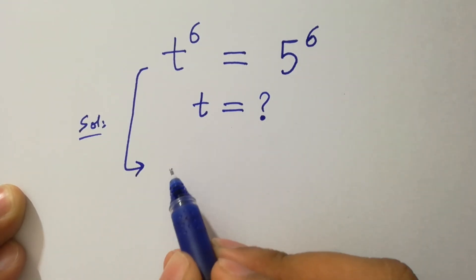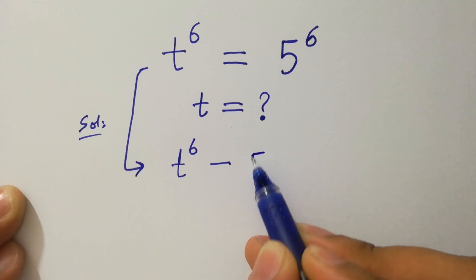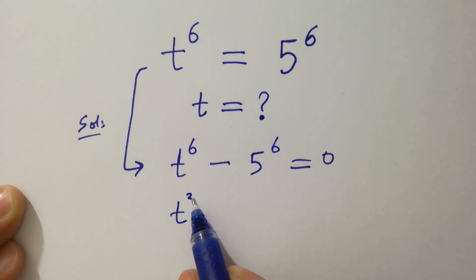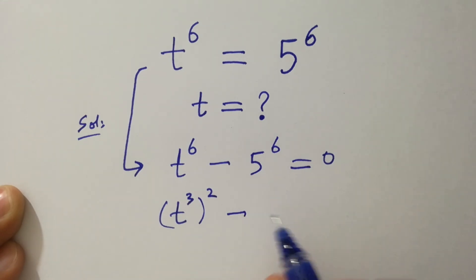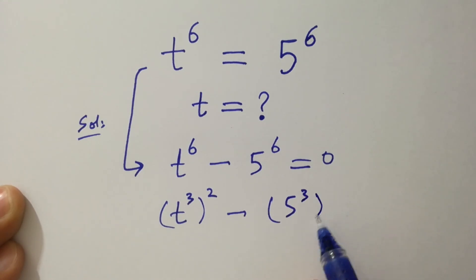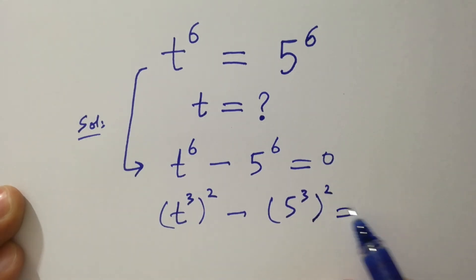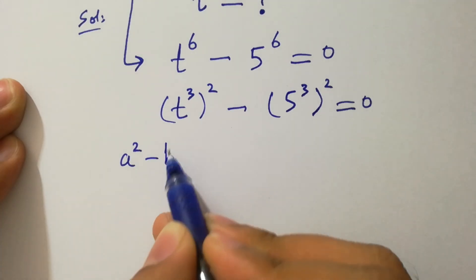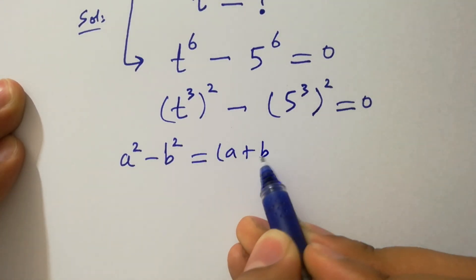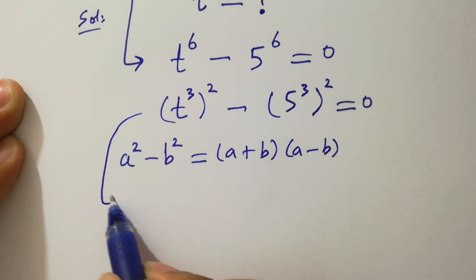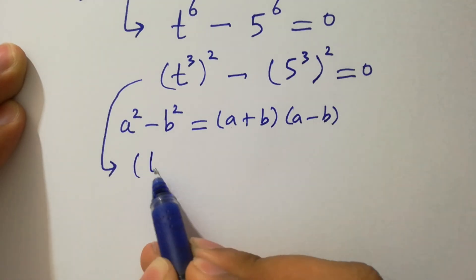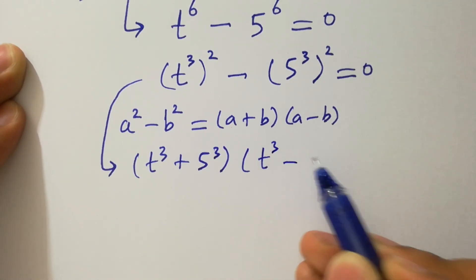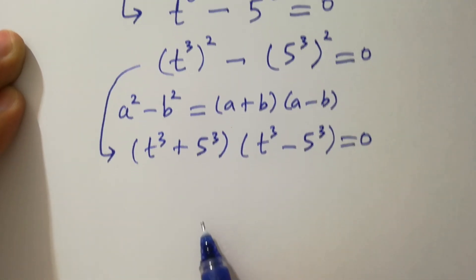It can be written as t to the power 6 minus 5 to the power 6 equal to 0, which is the same as t cubed to the whole power squared minus 5 cubed to the whole power squared equal to 0. Since 3 times 2 is 6, we know the formula of a squared minus b squared, which equals a plus b times a minus b applied. It will be t cubed plus 5 cubed times t cubed minus 5 cubed equal to 0. We have two cases here.